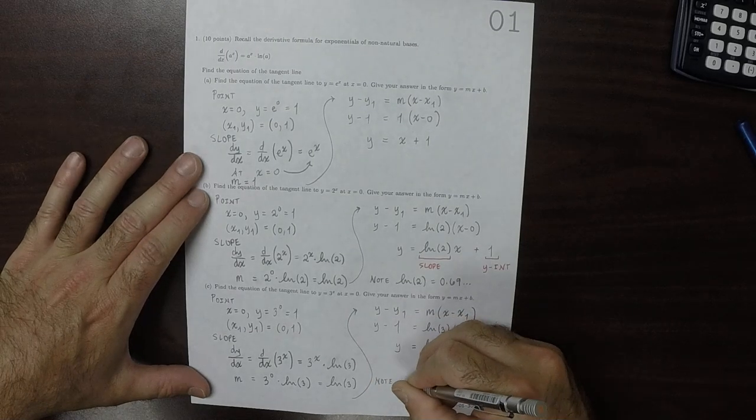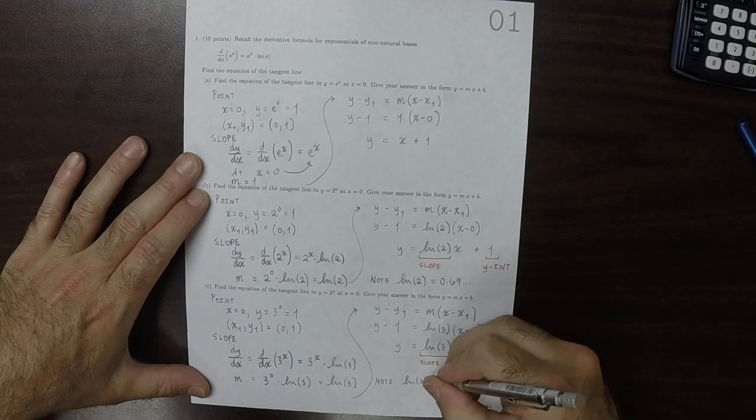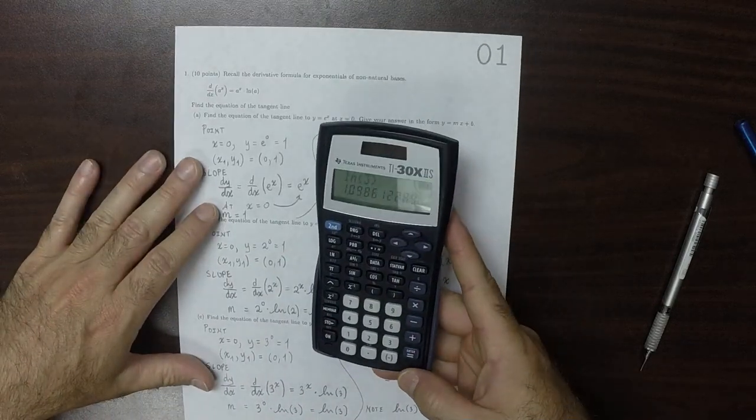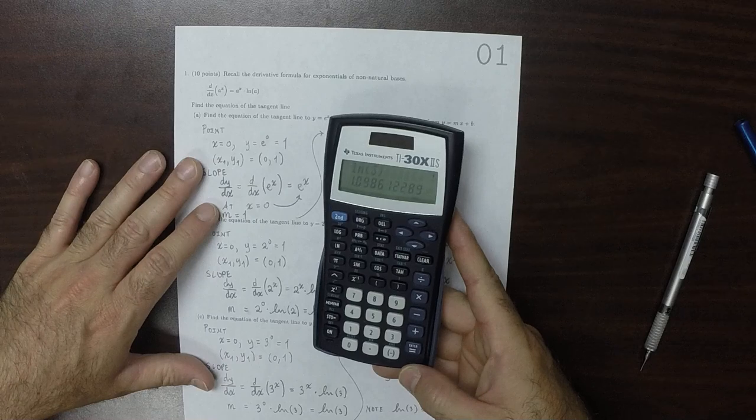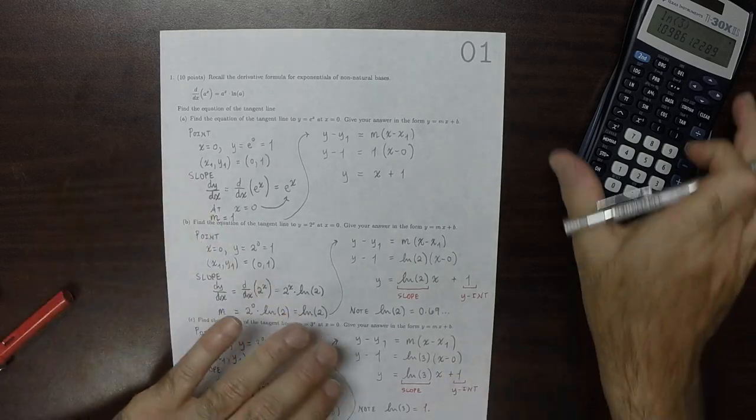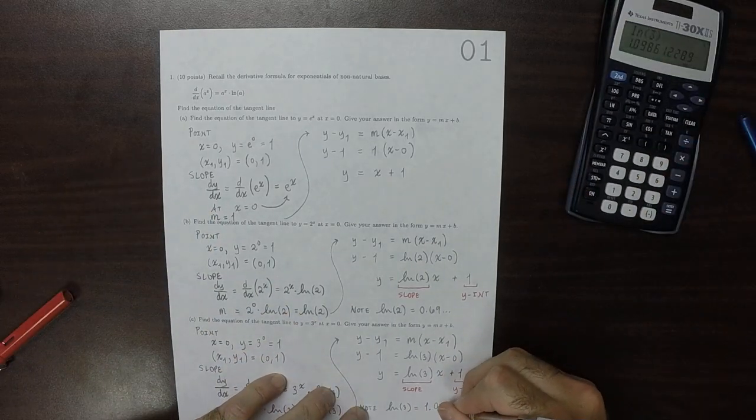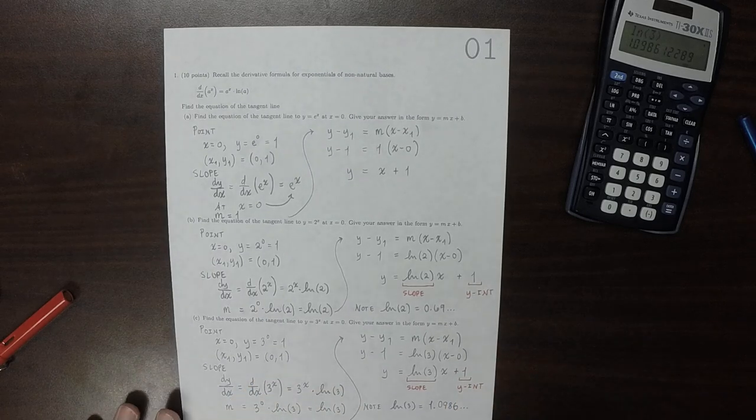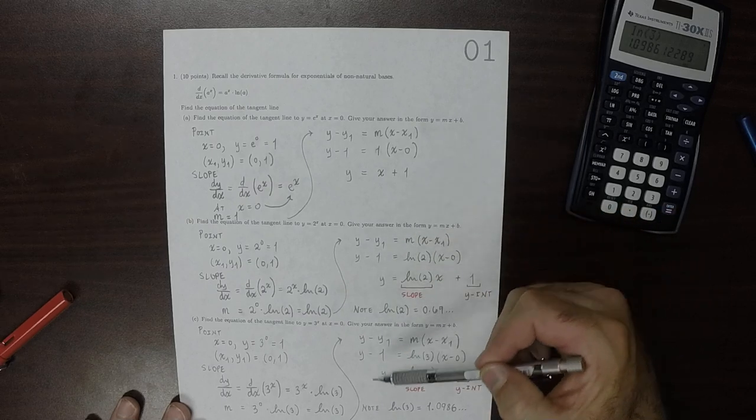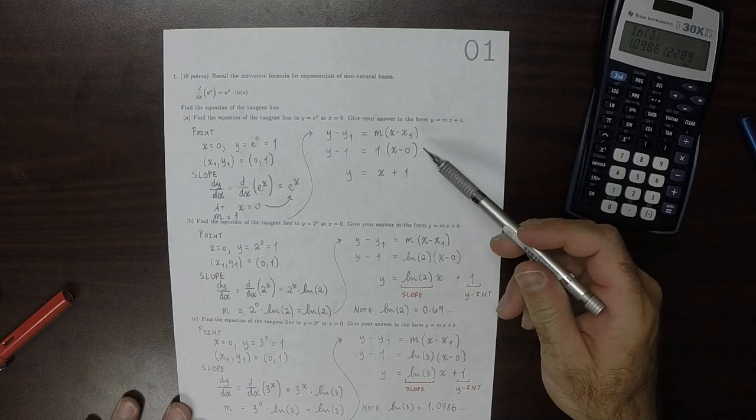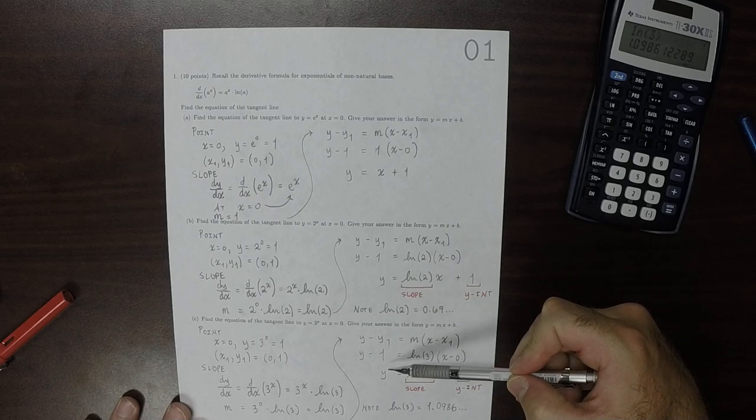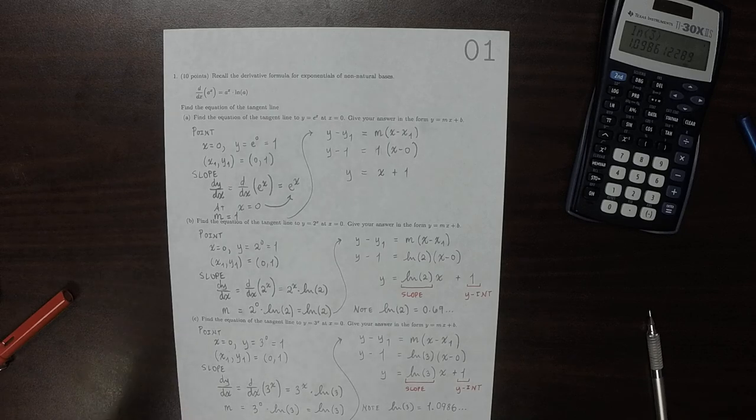And note that the logarithm of 3, according to the calculator, is about 1.1. So 1.0986. So that means that these three different exponentials, their tangent lines all go through the same point. They all go through the point 0, 1, but with slightly different slopes. This one goes through with slope 1, this one with slope a little less than 1, and this one with slope a little more than 1.